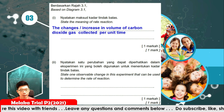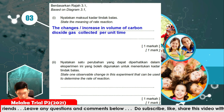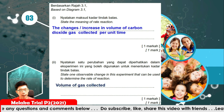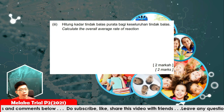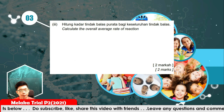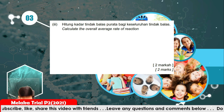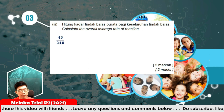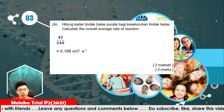The observable change that can be used to determine the rate of reaction is the volume of gas collected over time. To calculate the overall average rate of reaction, it is the volume divided by the time: 45 cubic centimetres divided by 240 gives 0.188 cubic centimetres per second.